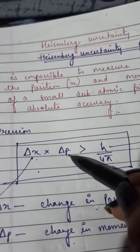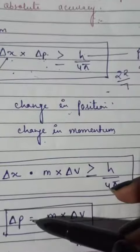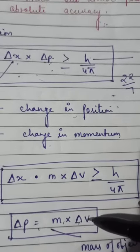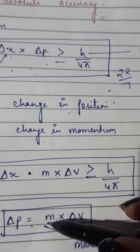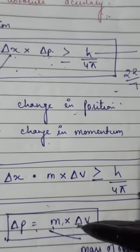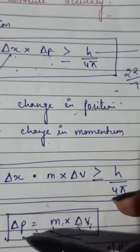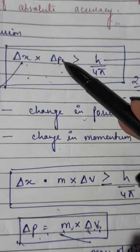In the place of Δp, like change in momentum, how you are going to calculate change in momentum? So we can put the value change in momentum Δp = m × Δv, mass into change in velocity. Mass will remain constant or fixed, mass will not change, only change will occur in velocity.